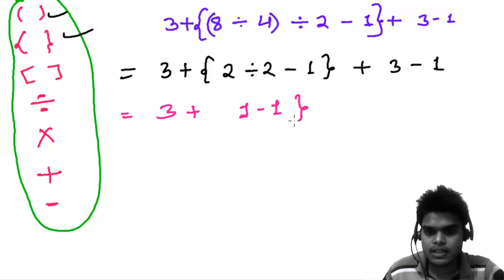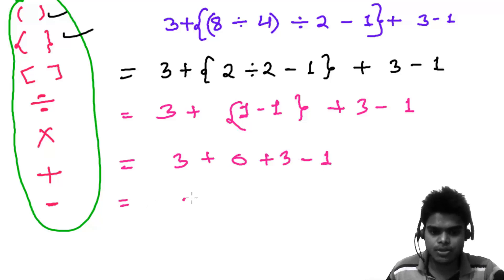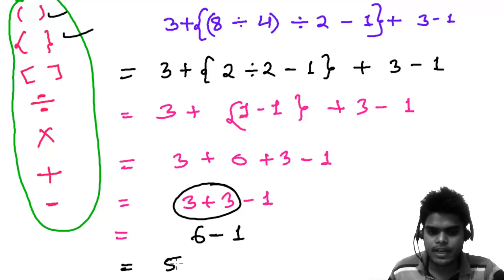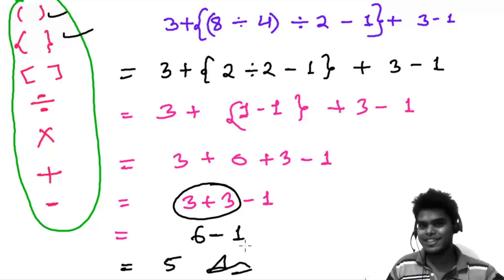Let's go further. 1 minus 1 is 0, plus 3 minus 1. Let's remove this 0, so it's 3 plus 3 minus 1. Now, plus and minus—which one are you going to choose first? We choose plus. 3 plus 3 is 6, minus 1, and 5 is our final answer. This is how you're going to follow the rules.